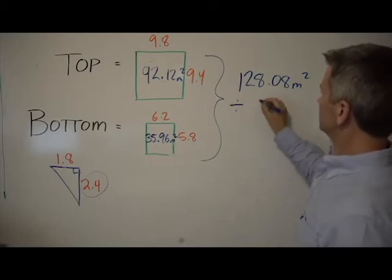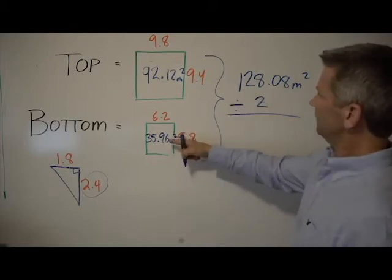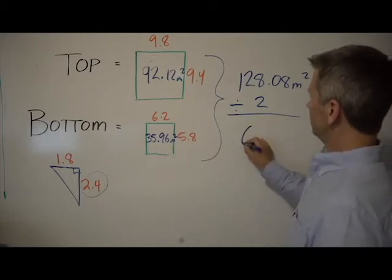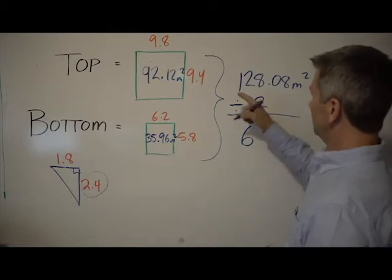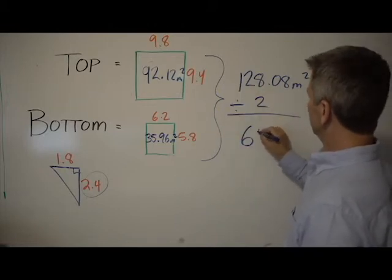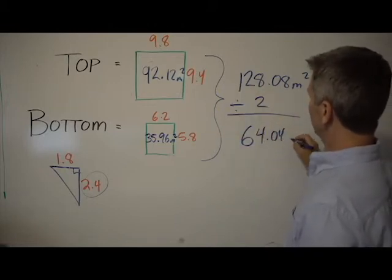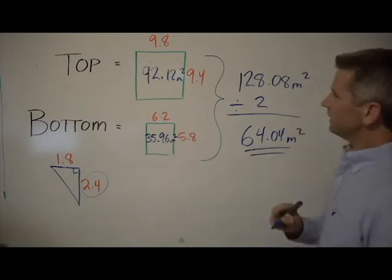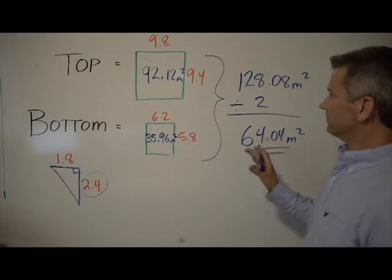And we'll average those numbers by dividing by the amount of numbers we're adding together, which is two, which gives us an average square meters between the two upper and lower excavations of 64.04 square meters. So that's our excavation average between the two.